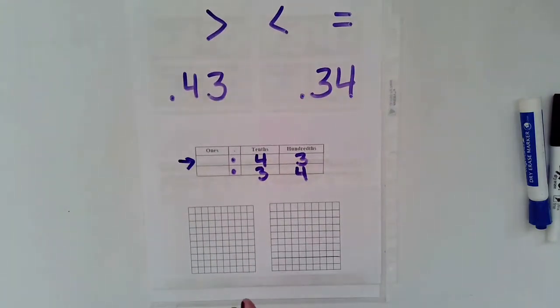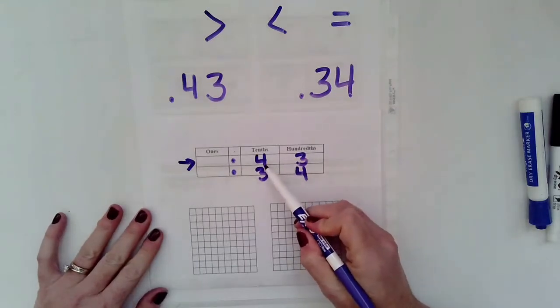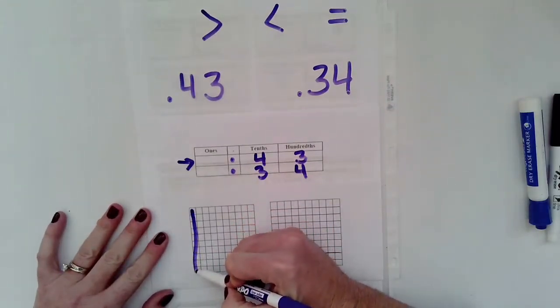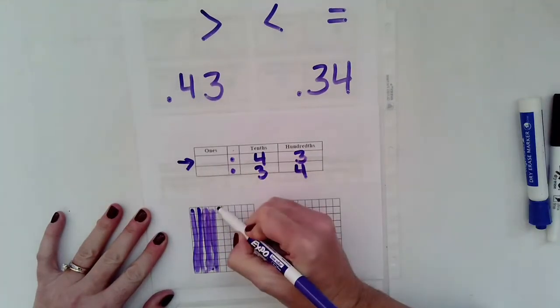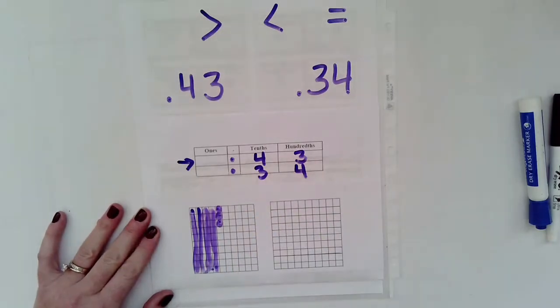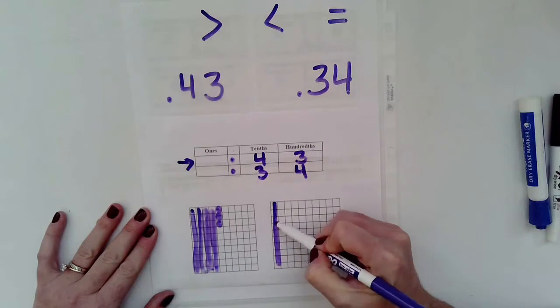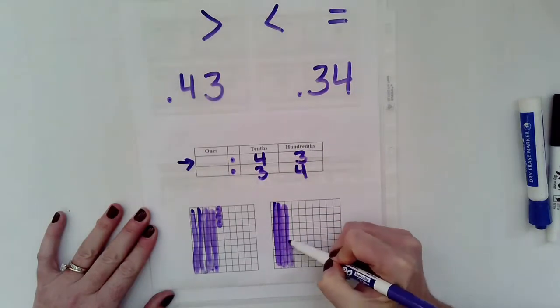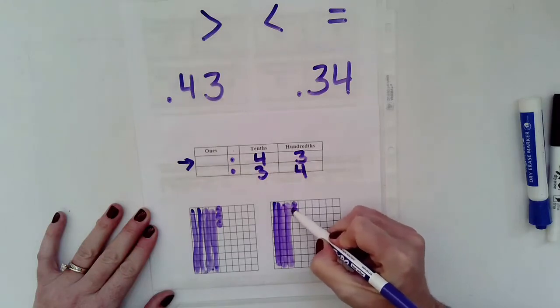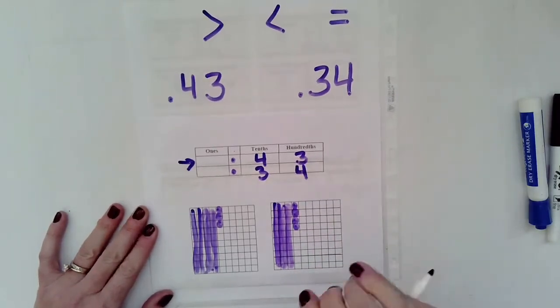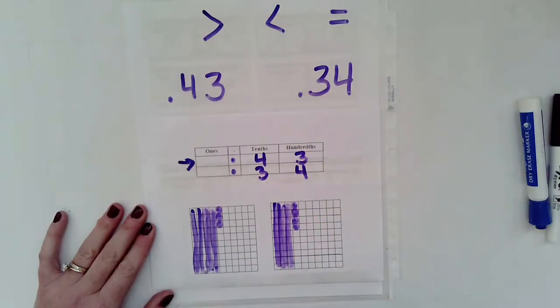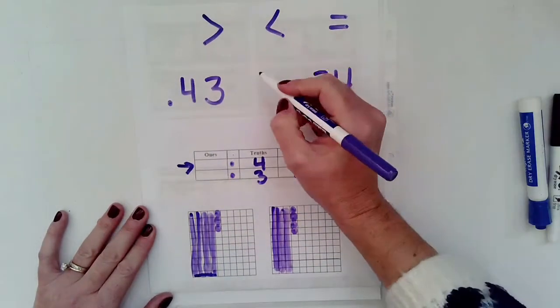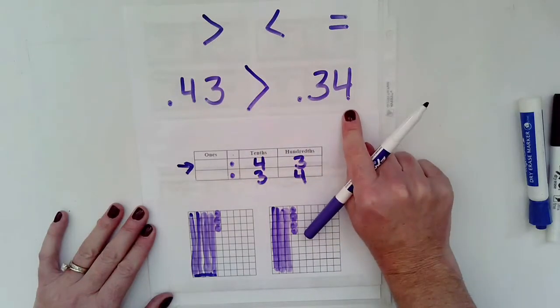Let's go ahead and draw this out. It might help us. So again, this one right here is 43 hundredths. So now I'm going to have that 4 tenths here, my 3 hundredths. And then my next one is the 3 tenths, and then I have 4 hundredths. So, 34 hundredths may have more ones here that I just colored in, but this one has 4 tenths. So I know that 43 hundredths is greater than 34 hundredths.